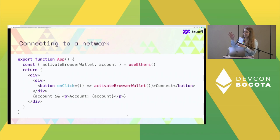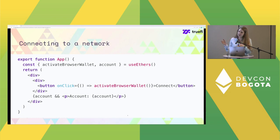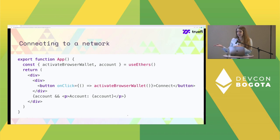Let's go to code examples of how to use useDApp. Here we have an example of how to connect to a network, because we need a wallet connection to interact with smart contracts. We have the useEthers function from useDApp core — it returns activateBrowserWallet, which is a function. When we call it, useDApp will ask MetaMask to connect to your application. In just a few lines, you can connect your wallet with MetaMask or any other browser wallet.